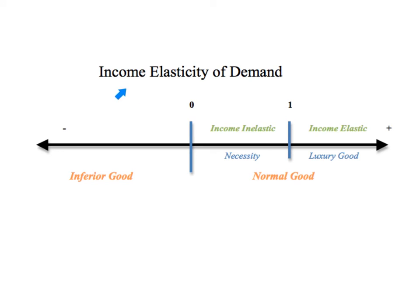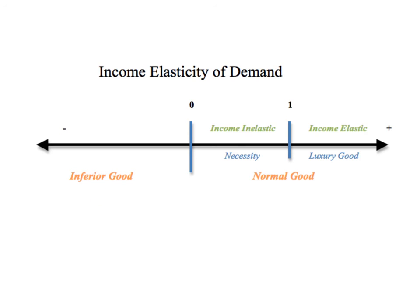So there you have it — income elasticity of demand, or YED, and what it tells us about the good we are selling. If the outcome of the equation is positive and less than one, we know our good is a necessity and it's income inelastic. If the outcome is greater than one and positive, we know it's a luxury good and it's income elastic. In both cases those would be normal goods. If the outcome of the equation is less than zero, no matter how great or small, we know that it's an inferior good. That information would be helpful to us as suppliers in the marketplace.